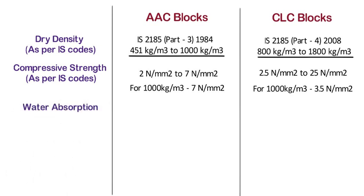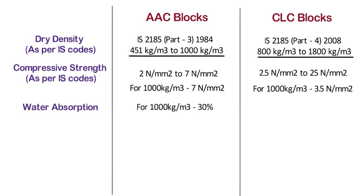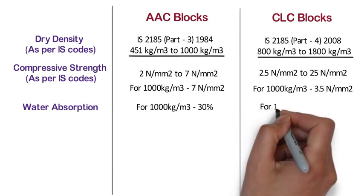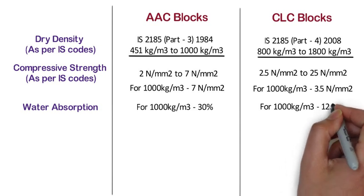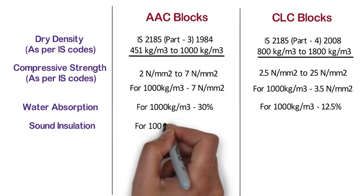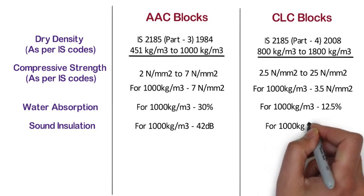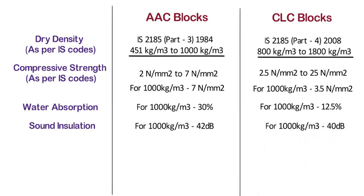Water absorption. For a density of 1000 kg/m³ of AAC block, the water absorption is 30%. Whereas, for a density of 1000 kg/m³ of CLC block, the water absorption is 12.5%. Sound insulation. For a density of 1000 kg/m³ of AAC block, the sound insulation is 42 dB. Whereas, for a density of 1000 kg/m³ of CLC block, the sound insulation is 40 dB.